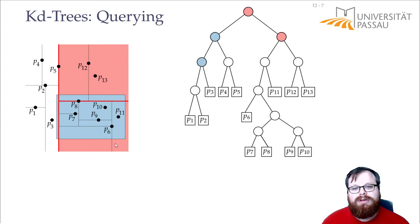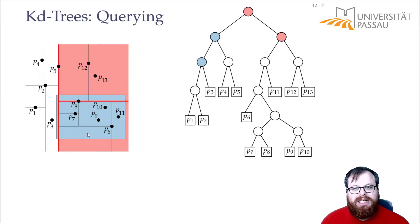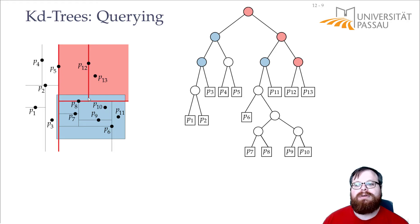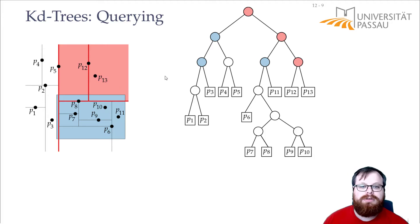We move on to the other side at the root split line. The next line splits into top and bottom, and both sides contain part of the query rectangle, so we continue in both. Looking at the top: the next split line again has both sides containing part of the rectangle, so we continue in both. Both are leaves — we check whether each point lies in the rectangle. Neither does, so we don't continue.